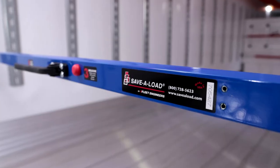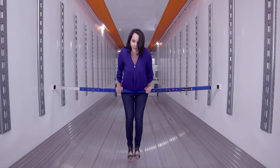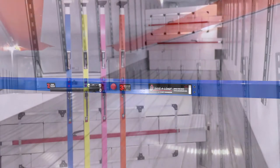Save-A-Load bars are made of corrosion-free, heavy-duty aluminum. They're lightweight, strong, and FDA-approved for use in reefer vans and around food.